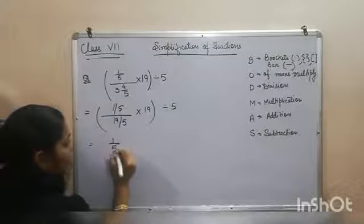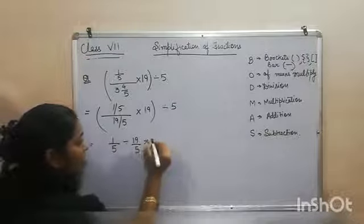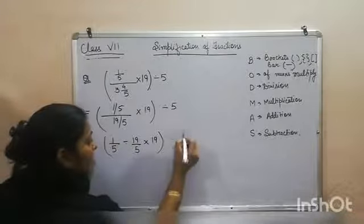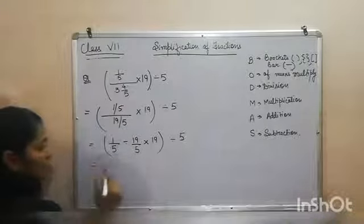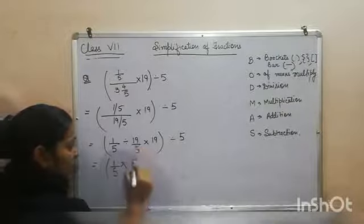So it will be 1 by 5 divided by 19 by 5 into 19 divided by 5. Now you remember the formula: keep, change, flip.